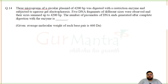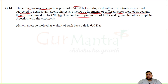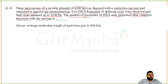Three micrograms of a circular plasmid of 4200 base pairs was digested with a restriction enzyme. Five DNA fragments of different sizes were observed, summing to 4200 base pairs. The number of picomoles of DNA ends generated after complete digestion: divide 4200 by 330 (average molecular weight per nucleotide for single strand), and the answer comes out between 10 to 11 picomoles.